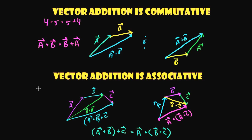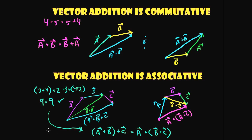That may seem complicated, but consider: 3 plus 4 plus 2 — you can do (3 plus 4) plus 2, which is 7 plus 2 = 9, or 3 plus (4 plus 2), which is 3 plus 6 = 9. They're equivalent. The same applies to vectors. To add a third vector C, just take its tail and place it at the tip of A plus B, and you get A plus B plus C.